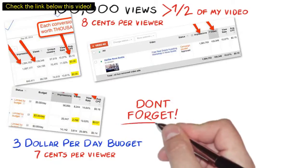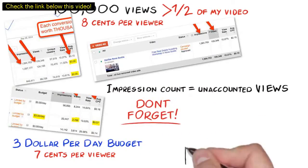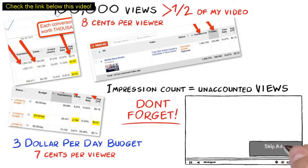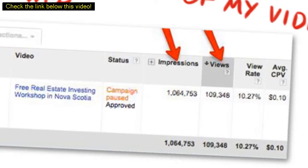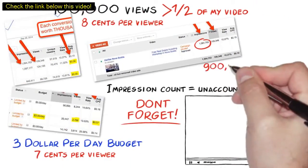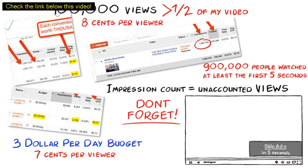Now let's not forget, impression count is also very important as these are unaccounted views — views for the first five seconds where the user can skip, or a little less than half of the video before they can skip the ad. These are forced views which are unaccounted. As you can see from this screenshot, it has over 100,000 paid views. But take a look at this: we have over 1 million impressions and over 100,000 views, which means 900,000-plus people who watched at least five seconds or a little less than half of the video — paid absolutely nothing for these 900,000 views.